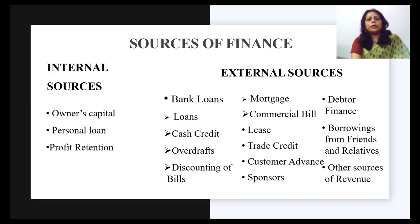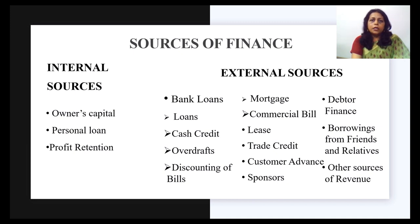Another way in which banks finance an event management company is through overdrafts. An overdraft is an extension of credit from a lending institution granted when an account reaches zero. The overdraft allows the account holder to continue withdrawing money even when the account has no funds or has insufficient funds to cover the amount of withdrawal.